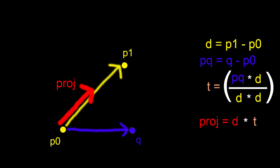So if we plug our variables into vector projection, we are using PQ dot D divided by D dot D multiplied by the vector D, like so.